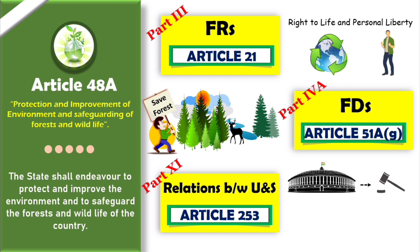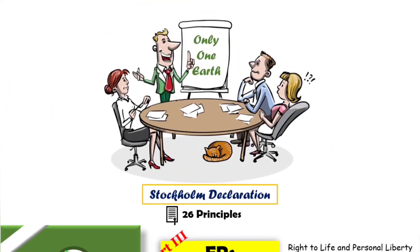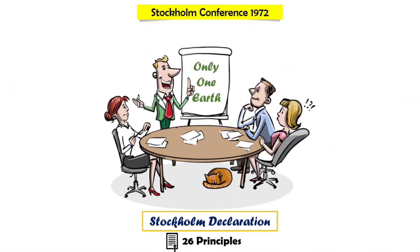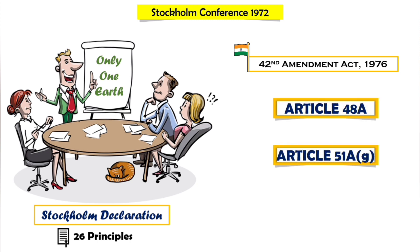You may ask what Article 253 has to do with environmental protection, since nothing about environment is written in it. The answer is that the Stockholm Conference of 1972 was held regarding environmental protection, in which India also participated. So for international conferences or treaties where a change is needed in our country, Article 253 allows such treaties or conferences to be implemented. After the Stockholm Conference, changes were made regarding environment in India, such as adding Articles 48A and 51A by the 42nd Amendment Act of 1976, as well as other laws.